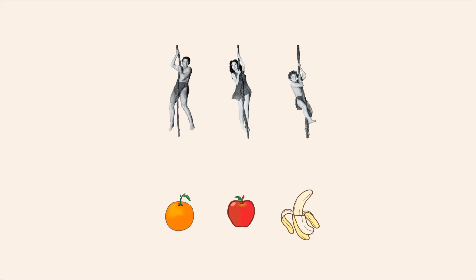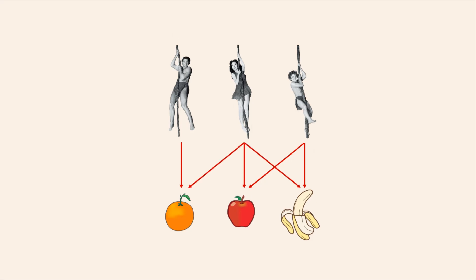For instance, let's say that Tarzan likes oranges, Boy likes apples and bananas, and Jane likes oranges, apples, and bananas. Instead of drawing multiple arrows from a single person, we could represent this relation by a collection of individual arrows, each connecting one person to one fruit.